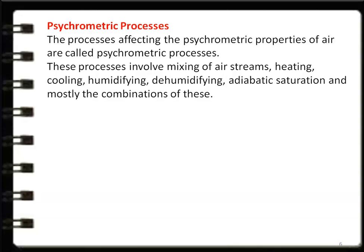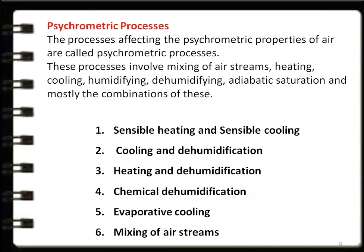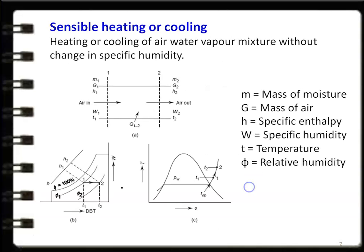In any air conditioning device, combinations of processes occur — there will be heating and humidification, or cooling and dehumidification. The various processes to be discussed in this lecture are: sensible heating and sensible cooling, cooling and dehumidification, chemical dehumidification, evaporative cooling, and mixing of air streams.